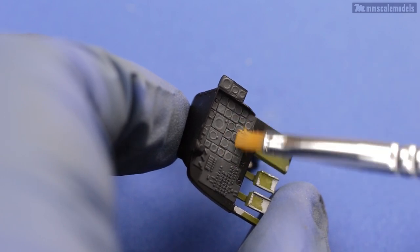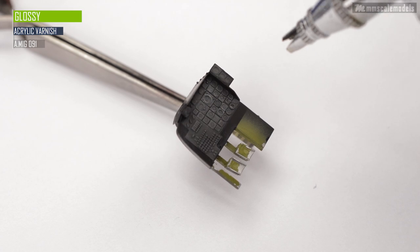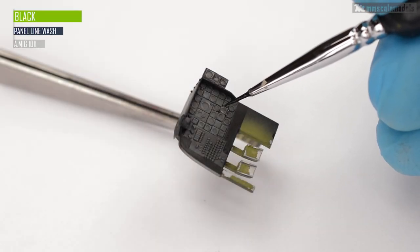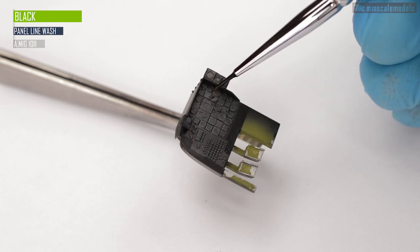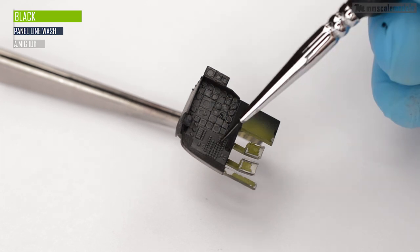After the dry brushing stage is done we can apply a layer of gloss varnish in preparation for the black wash. And here it does its magic flawlessly outlining the raised knobs and button details along with improving the definition of the individual instruments in the cluster.